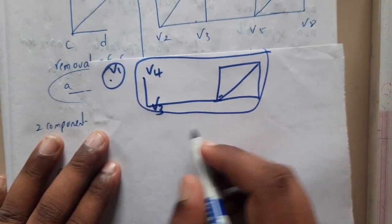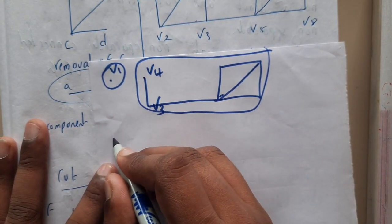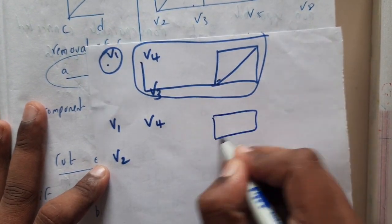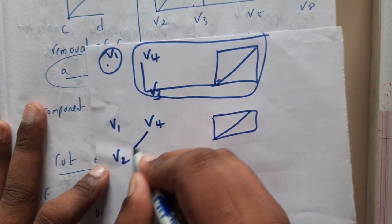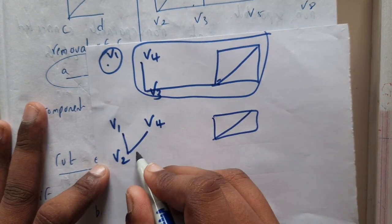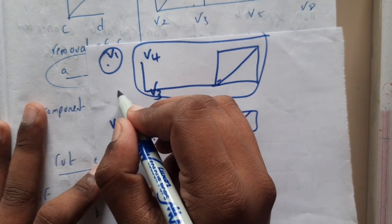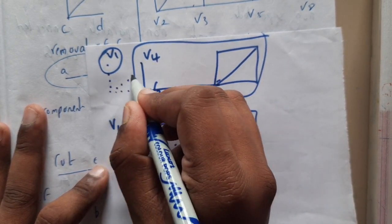So the shape will be the same. Here you are having one component, here you are having the second component. Similarly if you remove v3, we are removing v3 so this shape will be the same and this shape will be the same. Only this thing, this thing, and this thing are gone here. Similarly this thing and this thing and this thing, these three are gone.